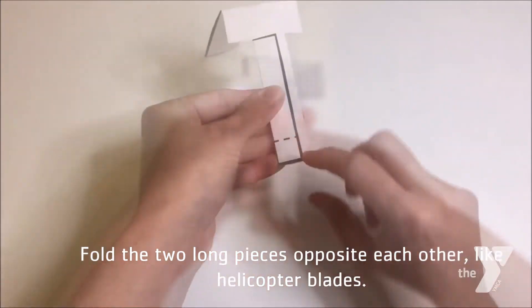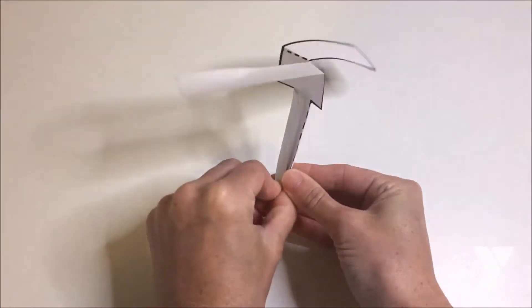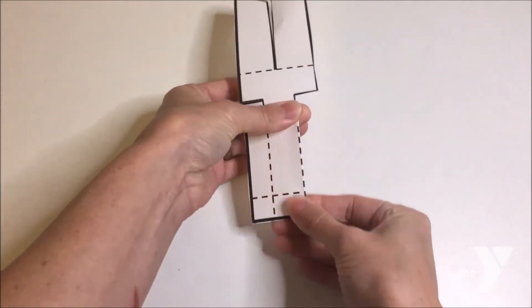In a helicopter though, we call the wings the rotary blades. Think rotary, because it kind of sounds like rotate. Here, let me show that folding step one more time.